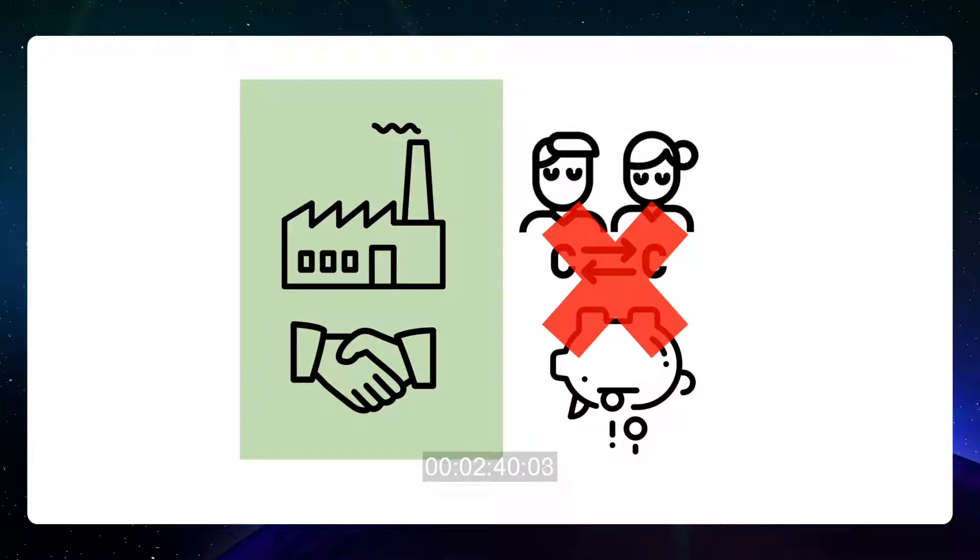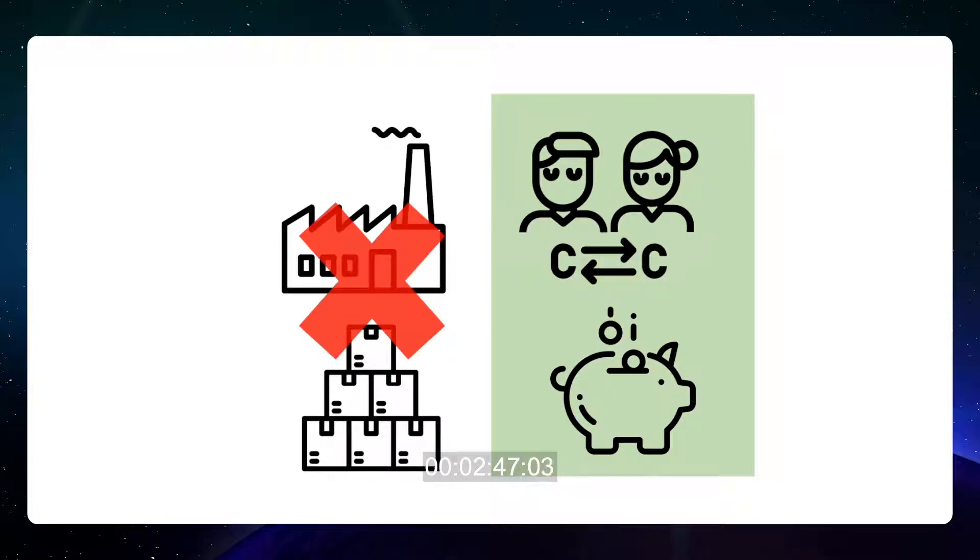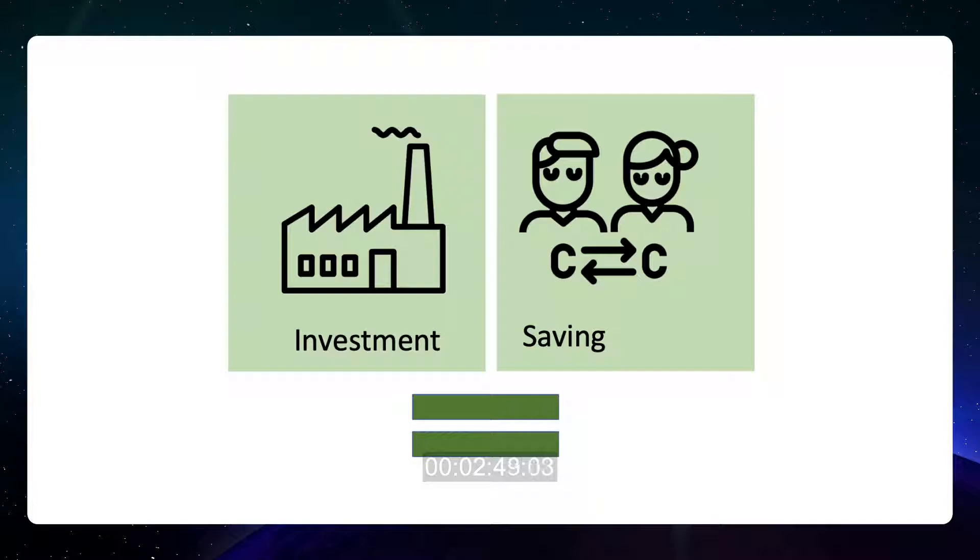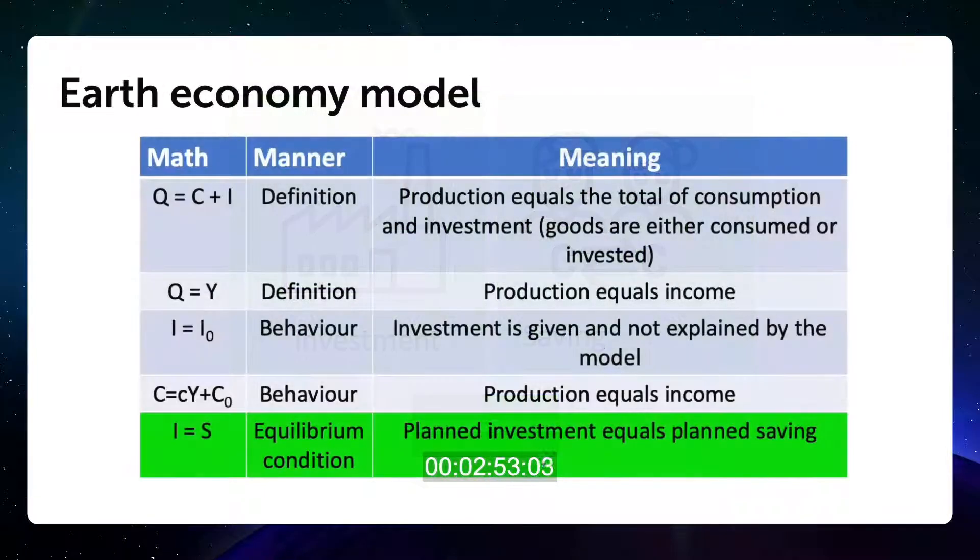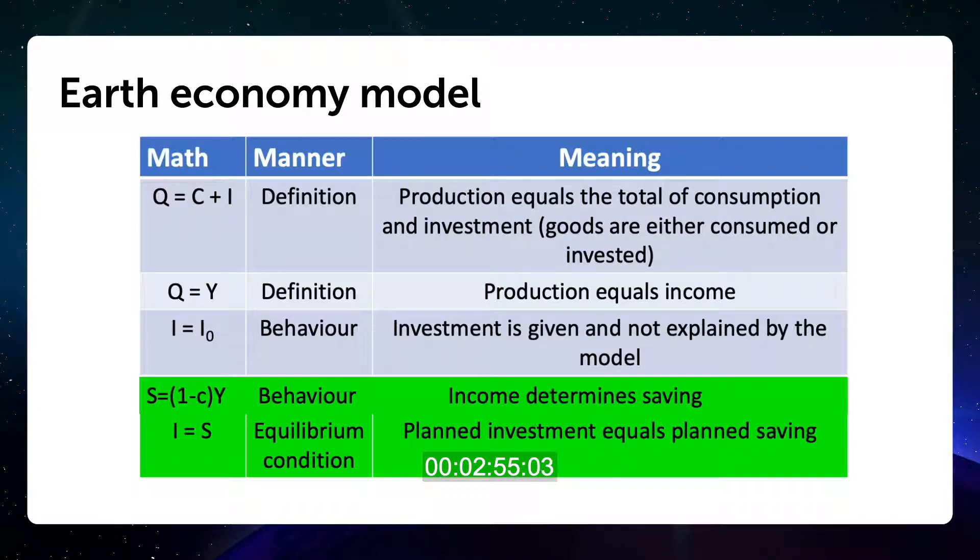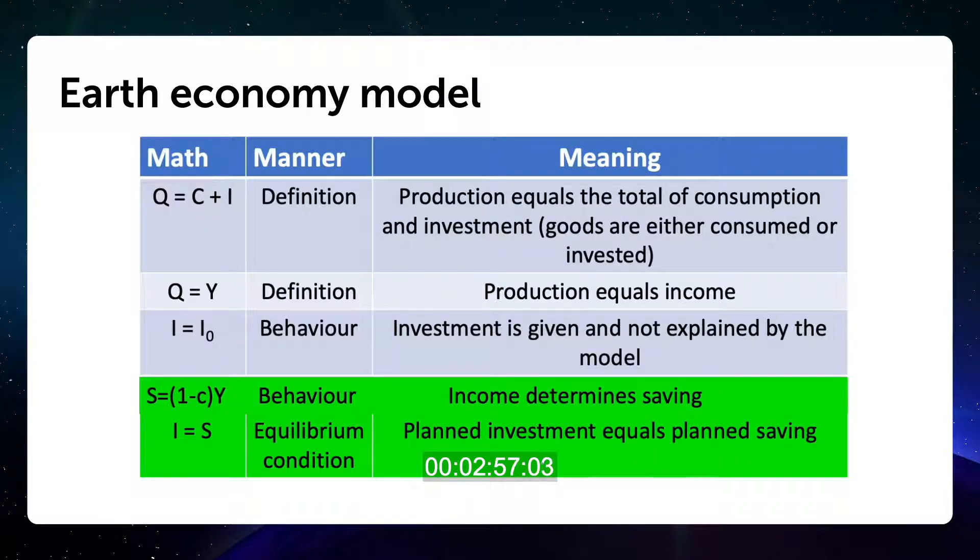Alternatively, consumers could be in equilibrium while firms could see their inventories change. And firms would not be in equilibrium. This is why we need to formulate the equilibrium for the earth economy in such a way as to clarify that the plans of both firms and households coincide. Now the plans in all sectors are realized and there is no force for change.